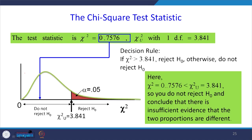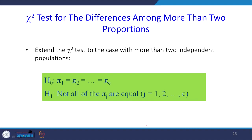The critical value for 1 degree of freedom at the chosen alpha is 3.841. The calculated chi-square value of 0.7576 is less than 3.841, so we do not reject H₀ and conclude there is insufficient evidence that the two proportions are different — meaning p₁ = p₂, i.e., the proportion of left-handed females equals the proportion of left-handed males.